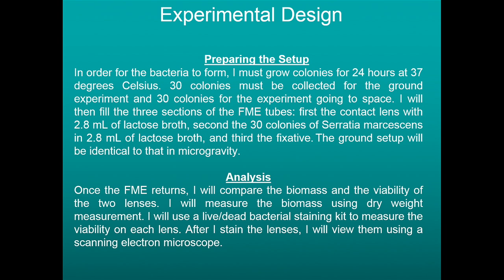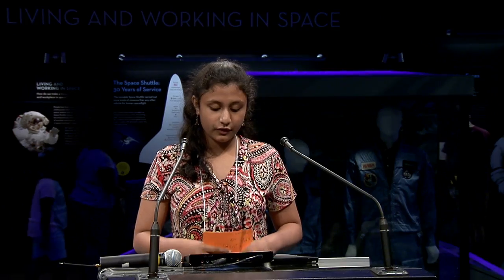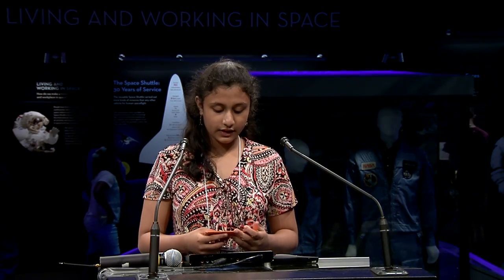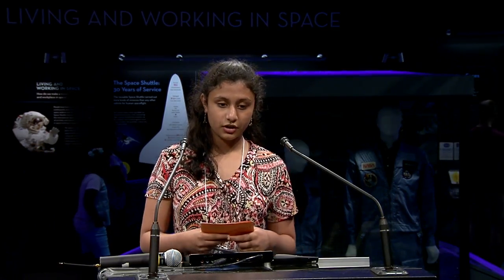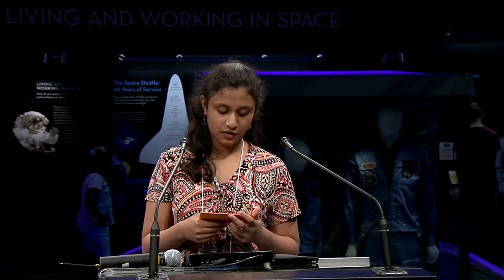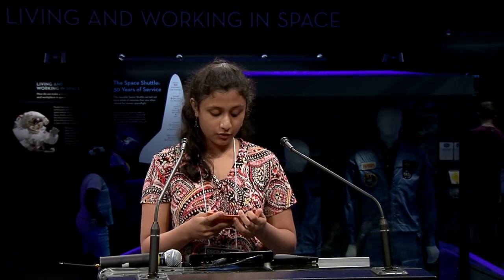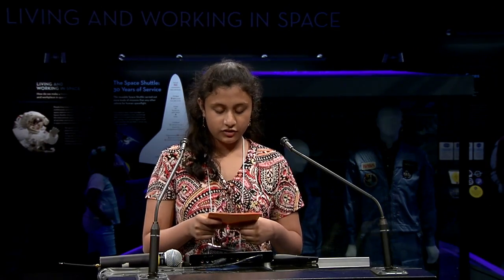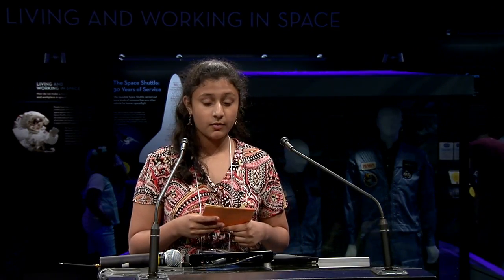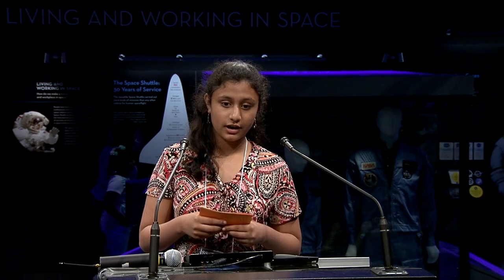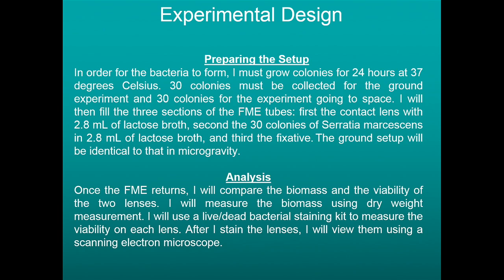Experiment design. In order for the bacteria to form, I must grow colonies at 24 hours at 37 degrees Celsius. 30 colonies will be collected for the ground experiment and 30 colonies for the experiment going to space. Once the FME returns, I will measure two aspects of the biofilm. First, I will measure biomass using dry weight measurement, which involves scraping the biofilm off the lens, putting it in sterilized water, and then weighing it. I will also measure viability using a live-dead bacterial staining kit, where the live cells and dead cells show up in different colors.